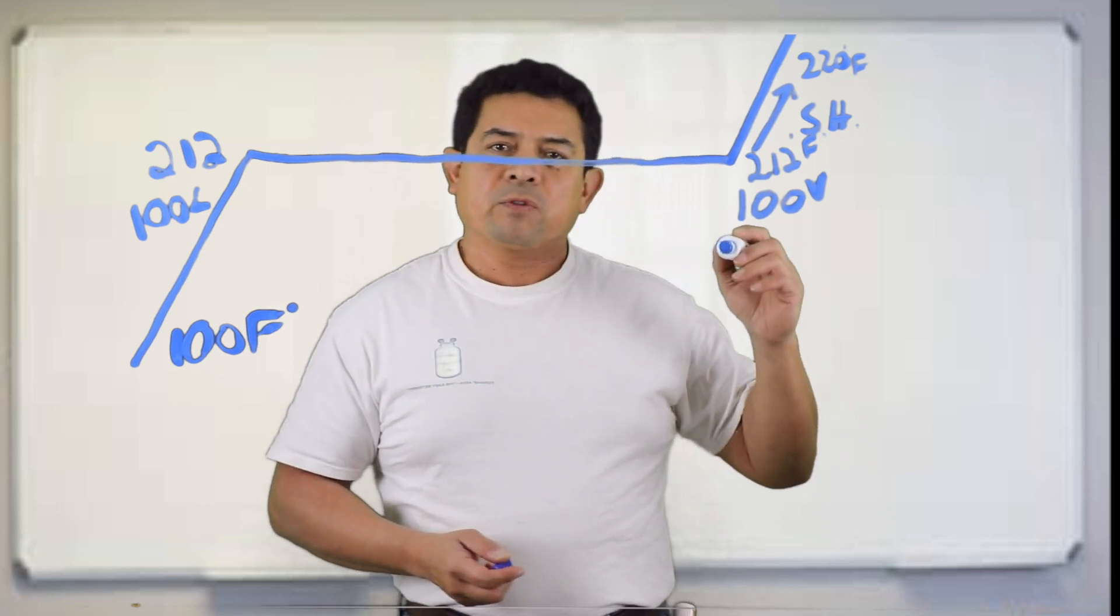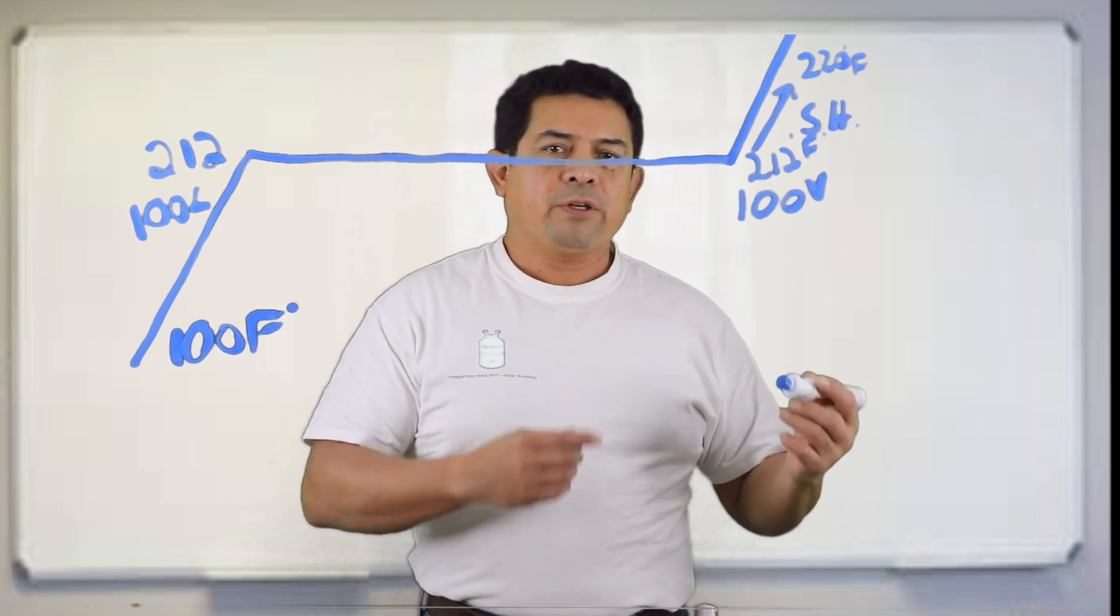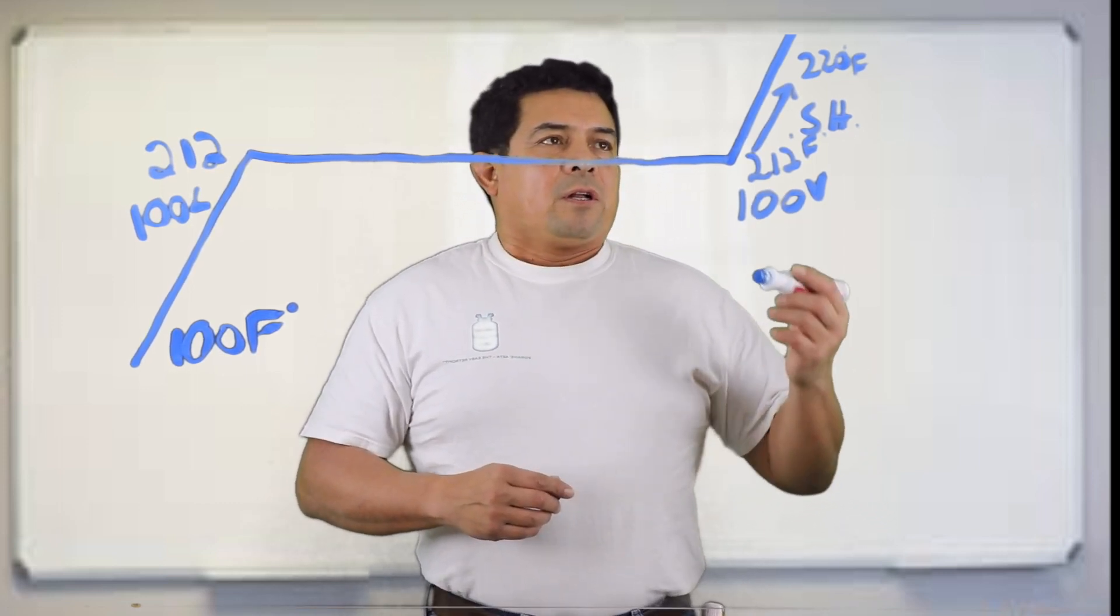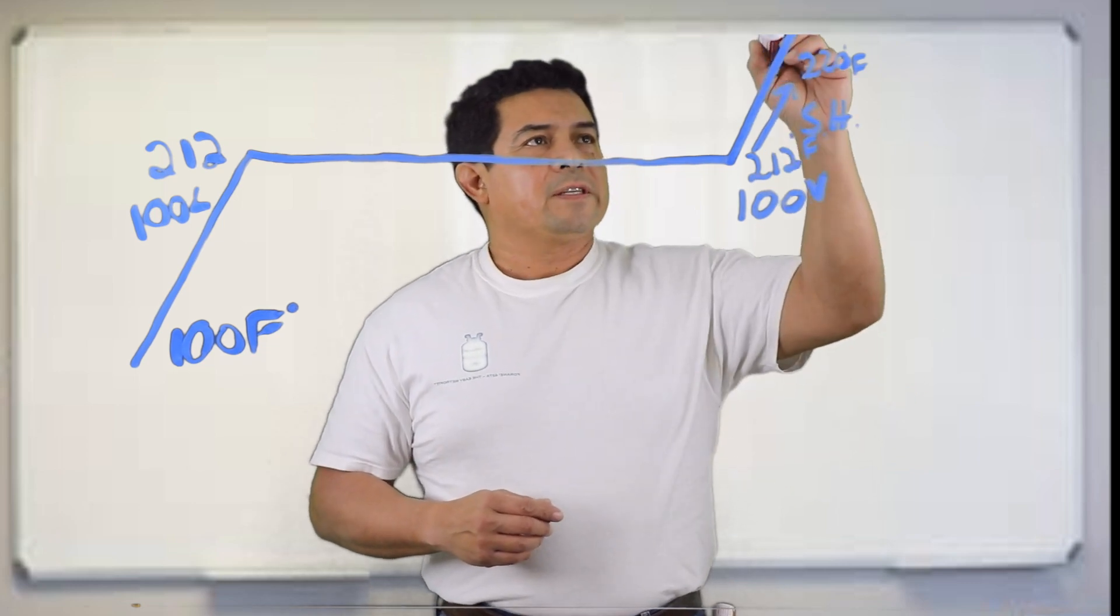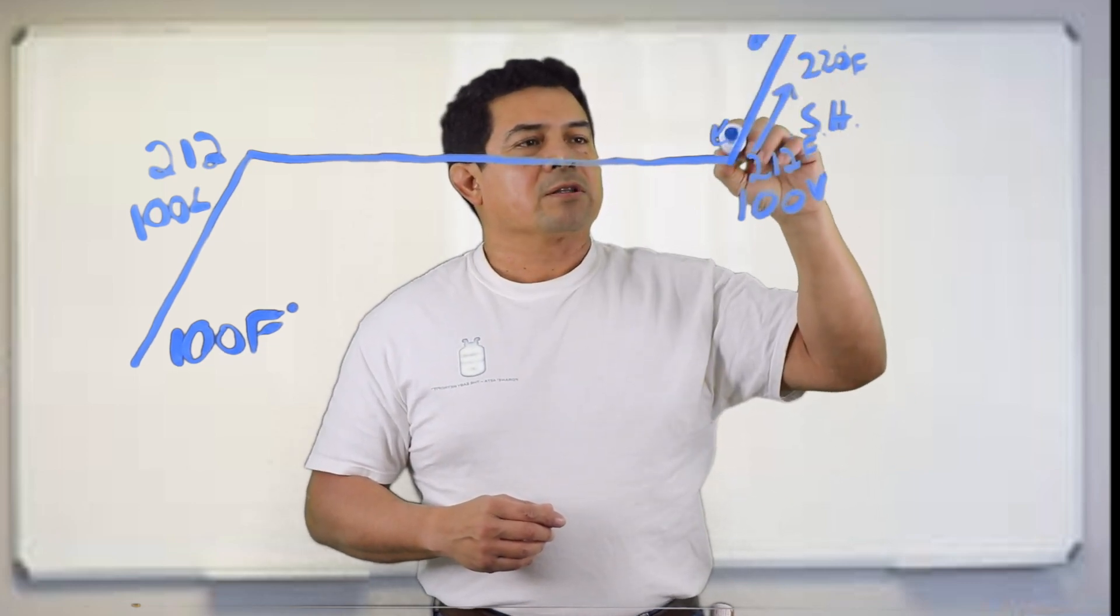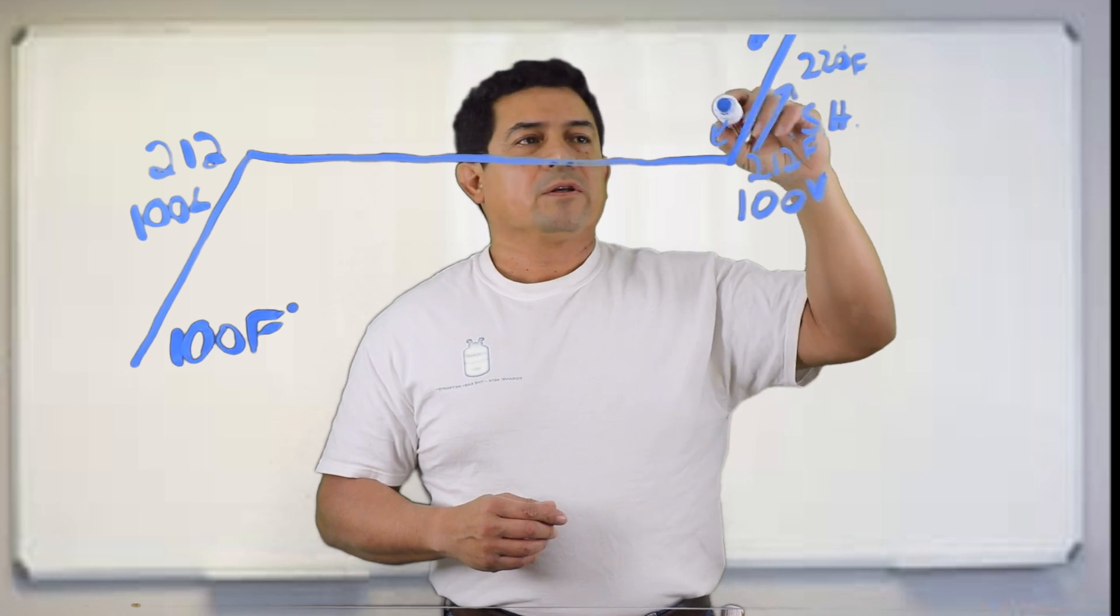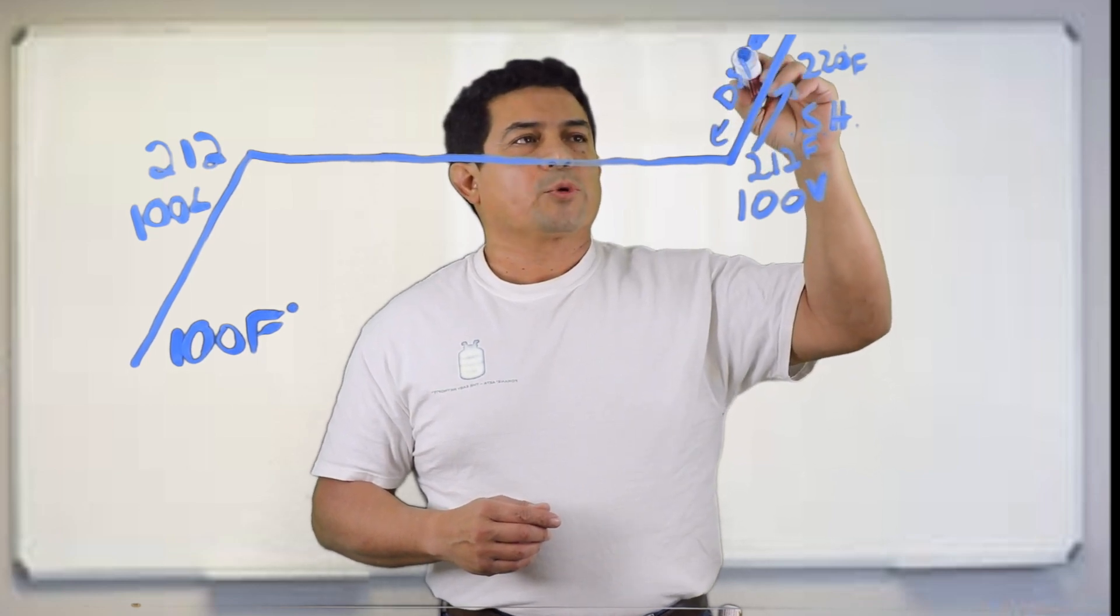If we go ahead and turn the flame off, if we don't add any more heat to it, what's going to happen? The temperature is going to drop. So what are we doing here? We are de-superheating.